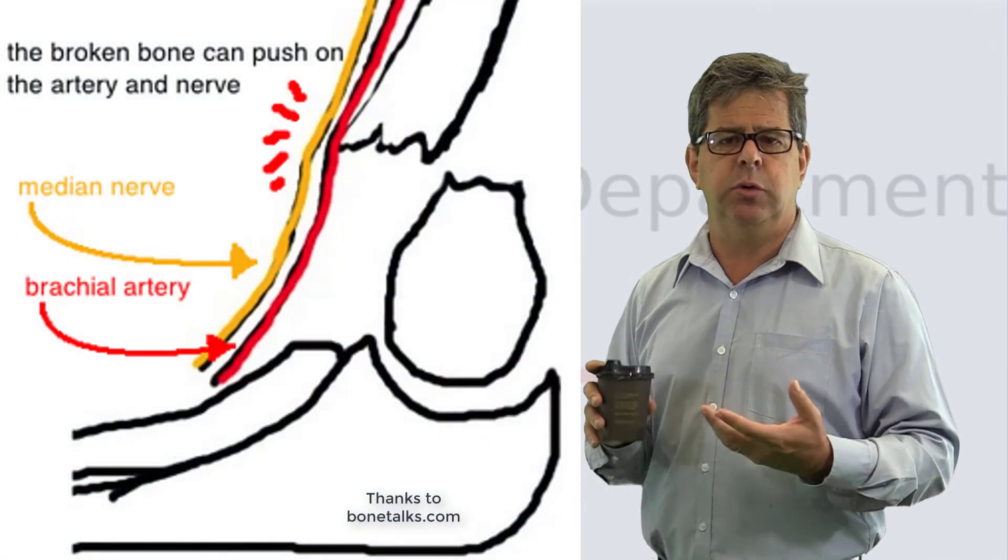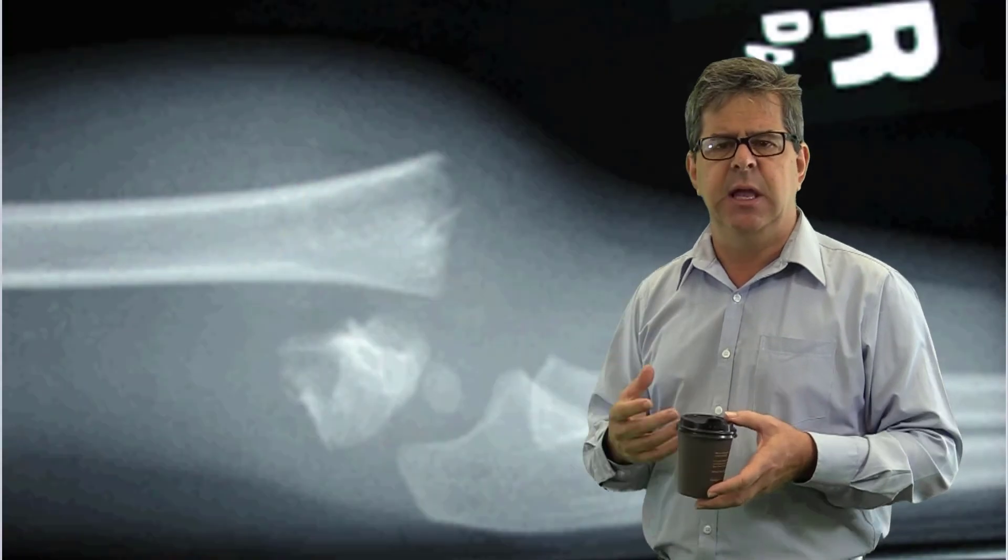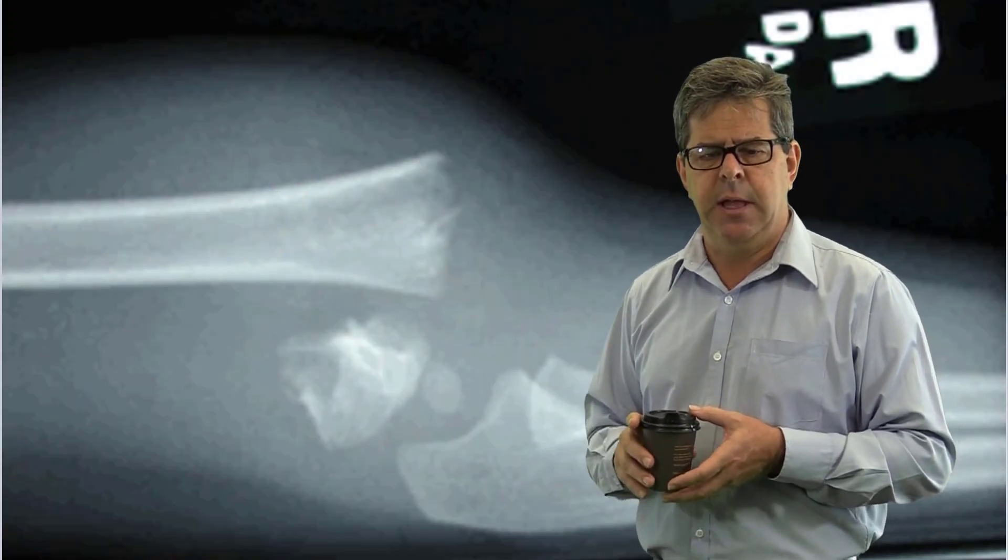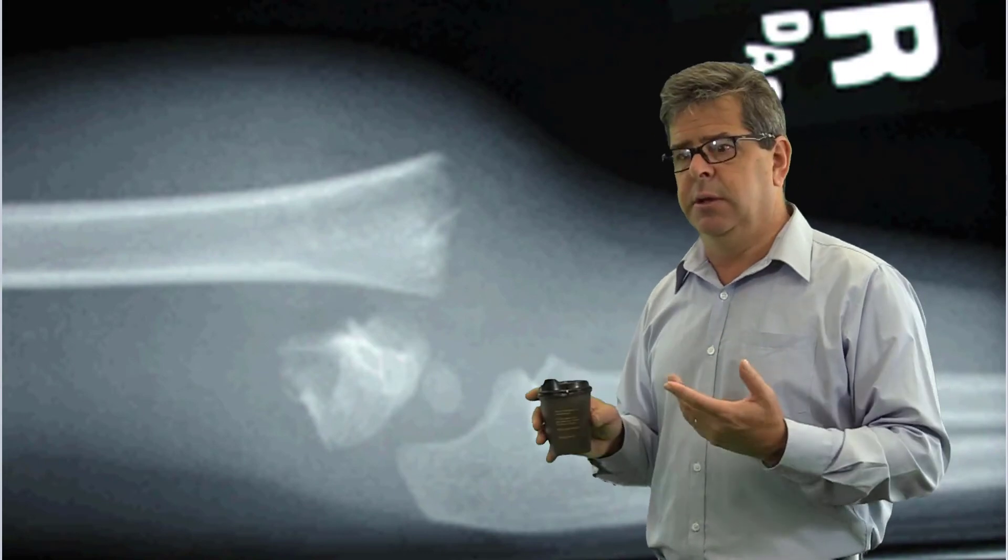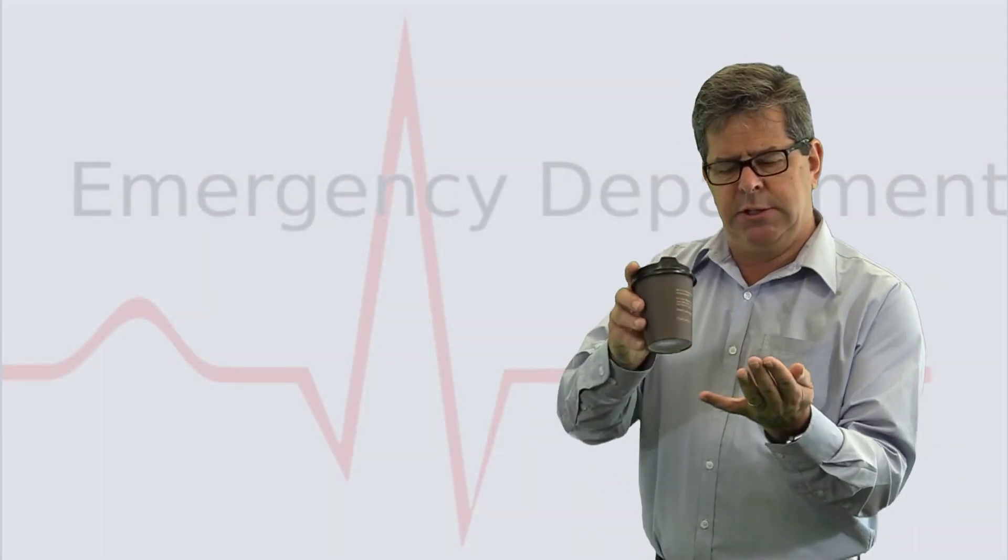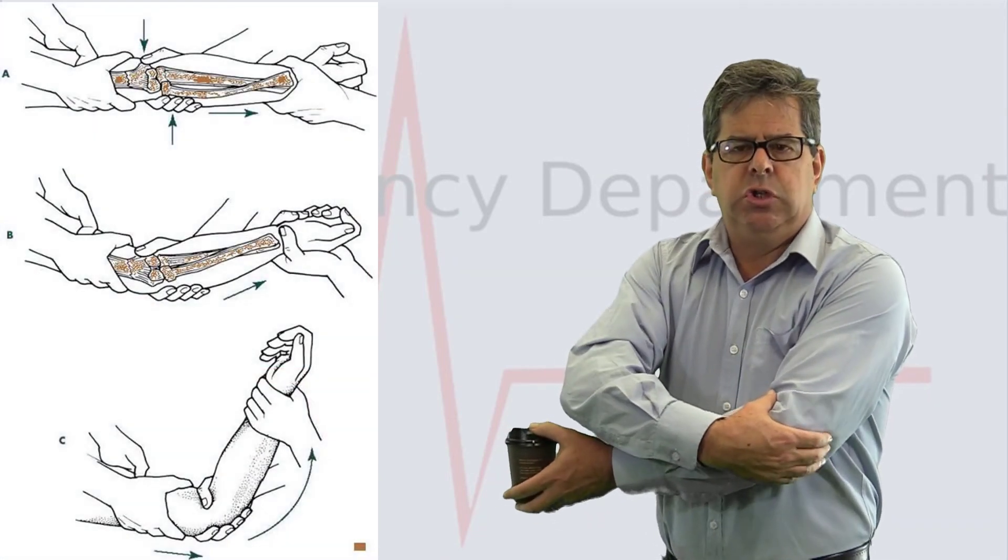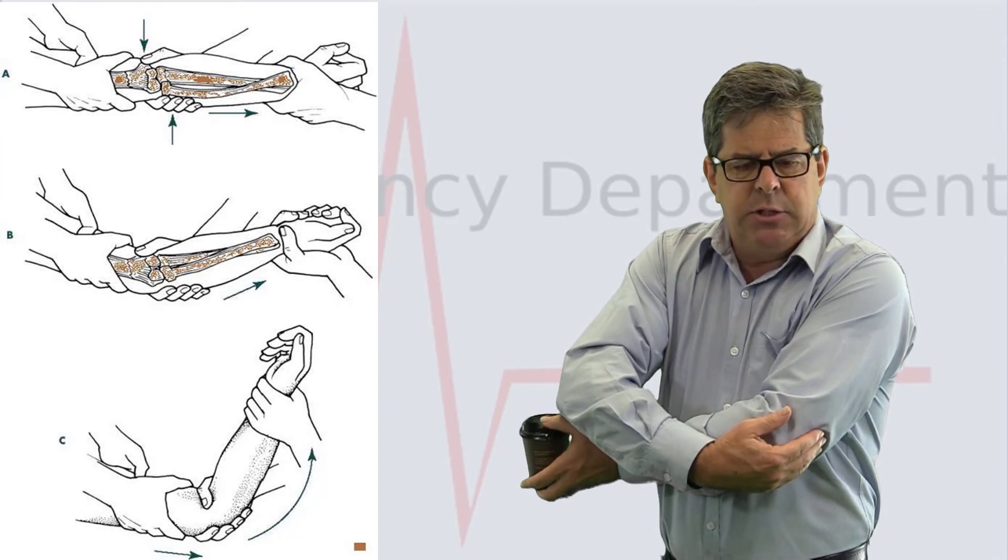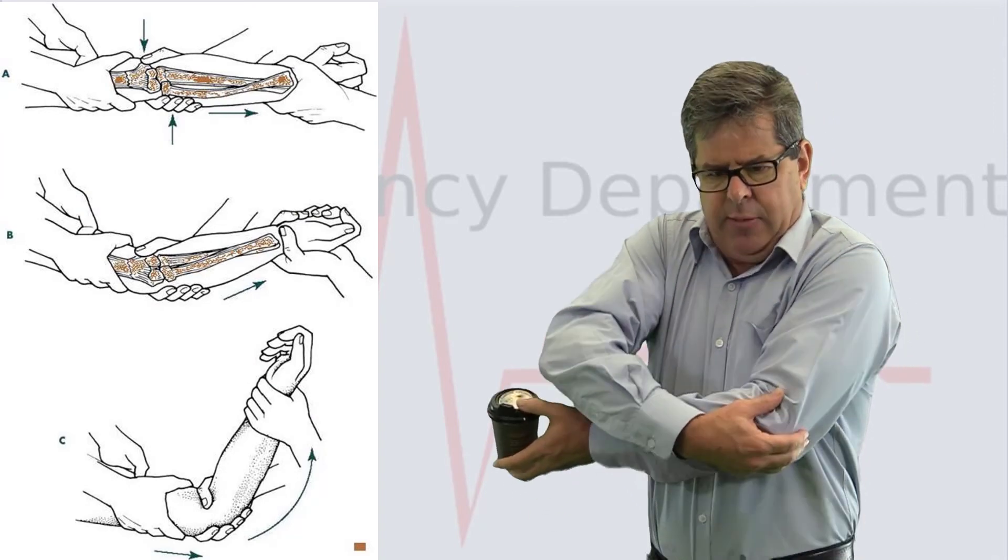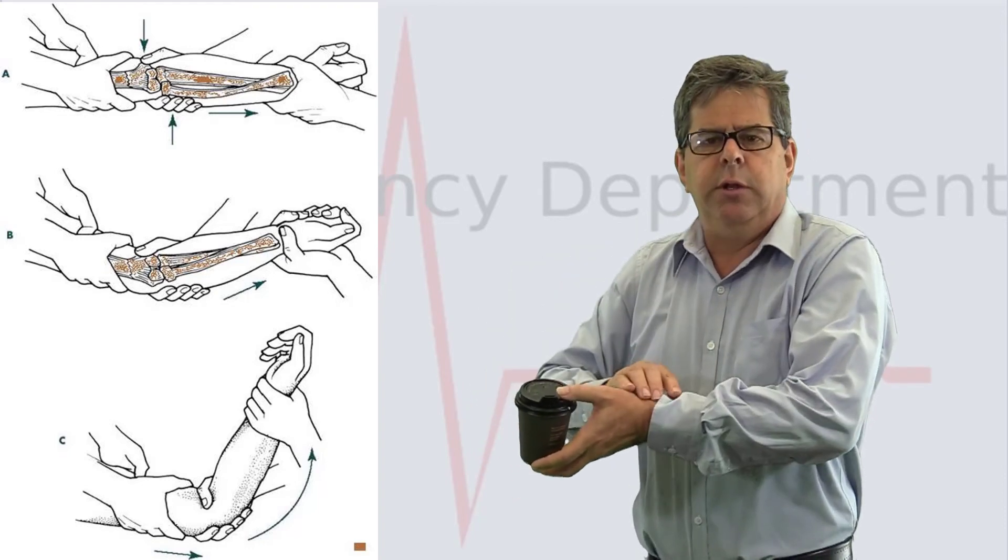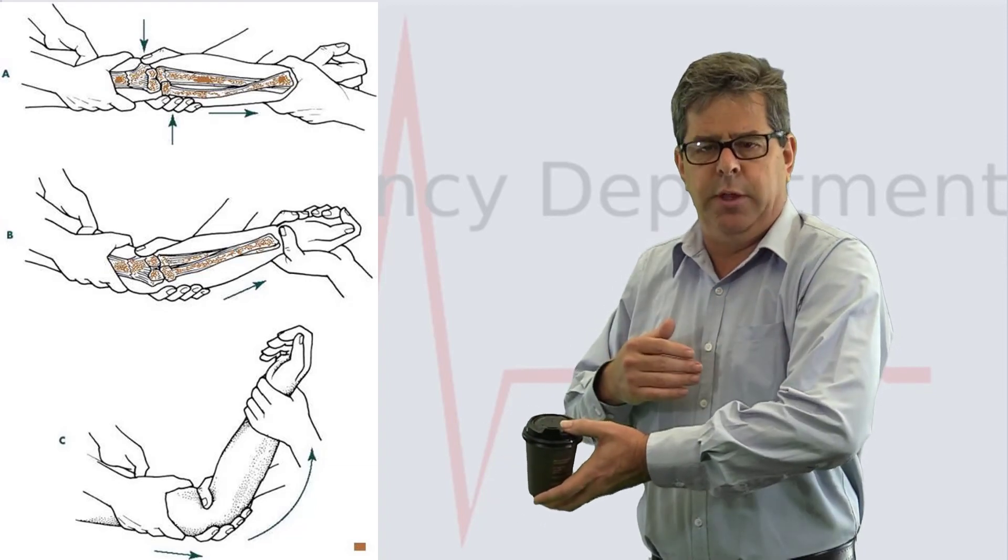Essentially, if you've got critical perfusion to the hand, you've lost your radial pulse, it's dusky, it's grossly displaced, and there's going to be a delay to go into theater, then you need to manipulate in the emergency department. You're going to need someone to hold proximally, someone to go distally and manipulate that part of the distal humerus that's going posteriorly and push it back into position, then put a back slab on.